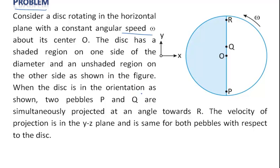When the disk is in the orientation as shown, two pebbles P and Q are simultaneously projected at an angle towards R. The velocity of projection is in the YZ plane and is same for both pebbles with respect to the disk.